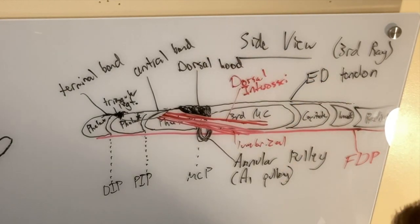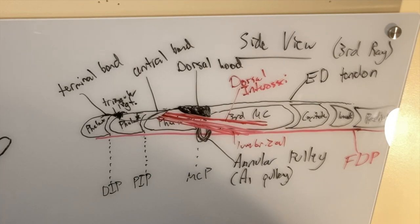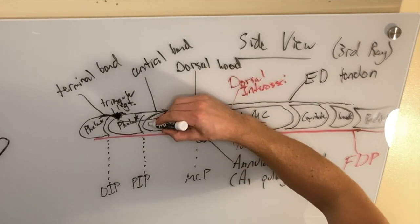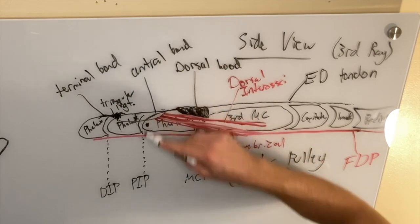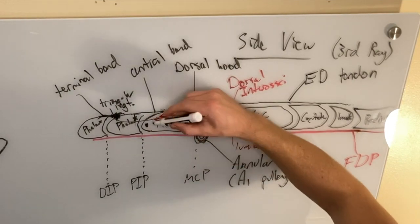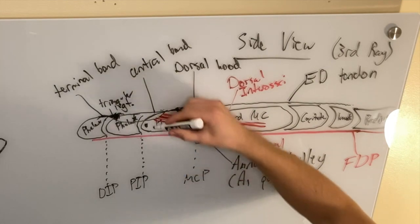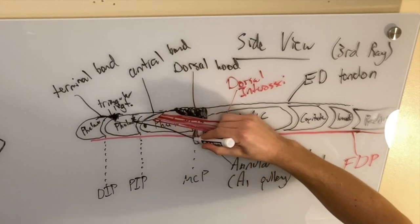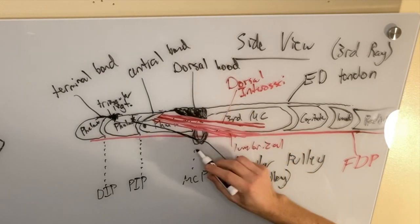And the last super important element is the oblique retinacular ligament. This is the axis of rotation for the PIP joint. And in order to get full extension, this oblique retinacular ligament, which attaches to the annular pulley